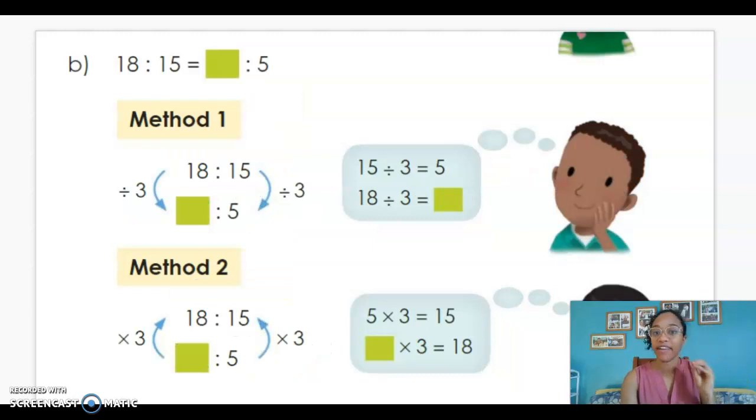In this bit, we have 18 to 15 is the same as what to 5. Now, when we stack these ratios one on top of the other, we can easily see that 15, the second term of the first ratio, is greater than 5, the second term of the second ratio. So dividing is a great strategy to use. 15 divided by what gives me 5? Well, it's 15 divided by 3.